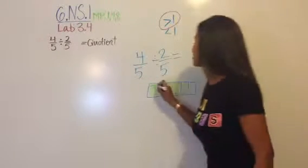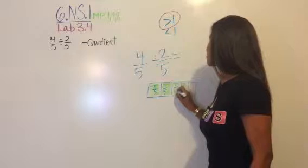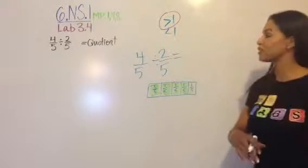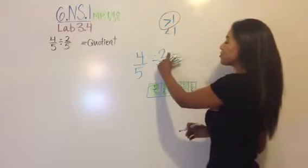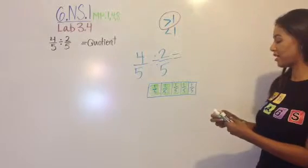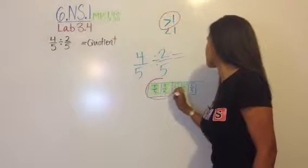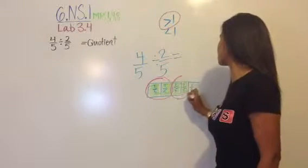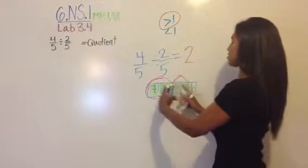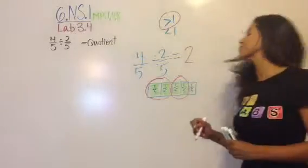Alright. So, these are all fifths. So, of course, we have our 4 fifths, which is what we're starting with here. So, just like we did in the other labs, we're going to circle groups of 2 fifths. To see how many groups of 2 fifths go into 4 fifths. So, I can circle a group of 2 fifths here. And, a group of 2 fifths here. So, my quotient is 2. Because, I have 2 fifths that go into 4 fifths. 1 times 2 times. 2 groups.